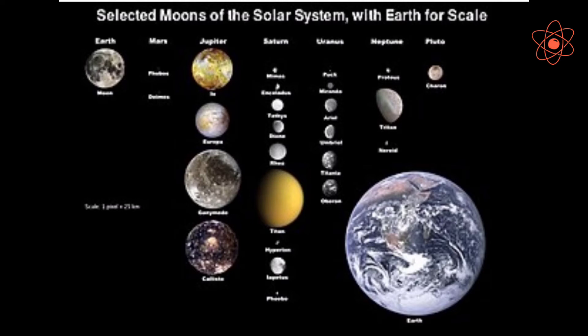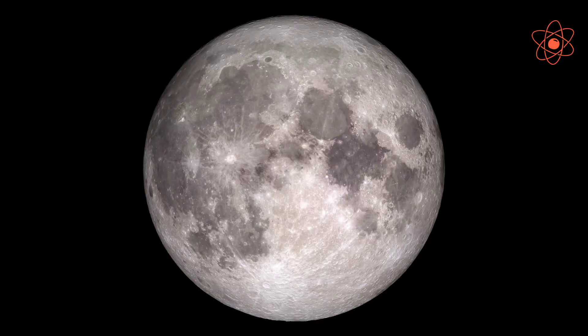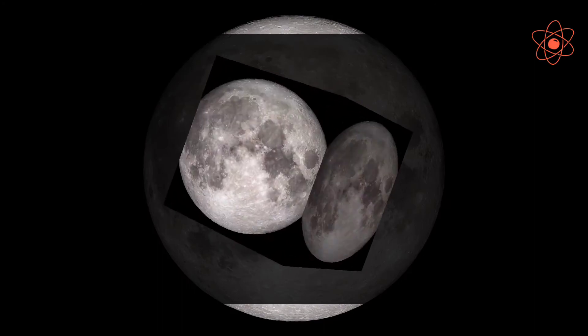All the planets except Mercury and Venus have natural satellites. The Moon is the only natural satellite of the Earth. Let us discuss about Moon.